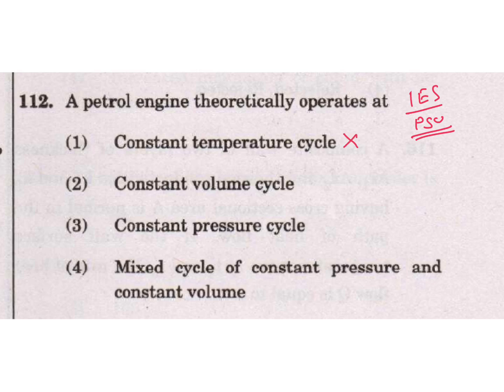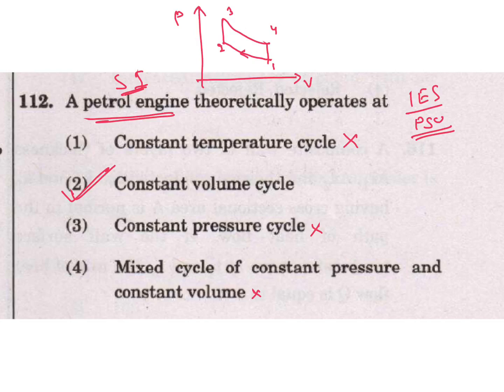This is also asked in IES and other PSU exams. Same question - constant temperature cycle? No. Constant volume cycle, constant pressure cycle, mixed cycle of constant pressure and constant volume. This is constant volume cycle. Petrol engine or SI engine or Otto cycle. Let me draw the PV diagram. 1 to 2 and 3 to 4 is isentropic process. 2 to 3 and 4 to 1 is constant volume process.